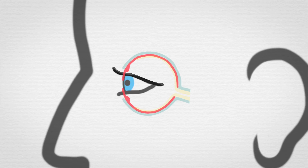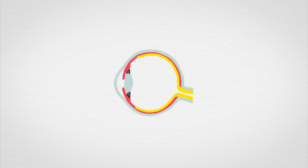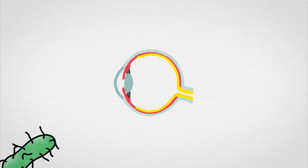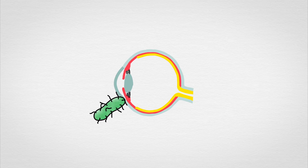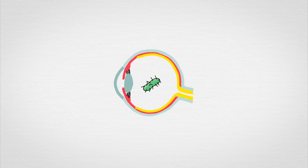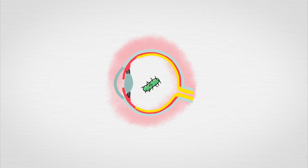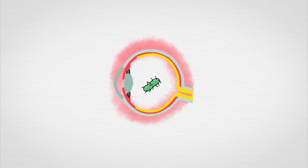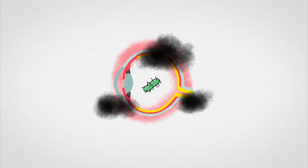Uveitis is an inflammation inside the eye. It can be caused by bacteria or a virus that has got into the eye. The body's immune system then tries to attack the intruder. This can leave you with a painfully red eye, and it can damage your eyesight. Other symptoms include blurred vision and seeing black or white spots.